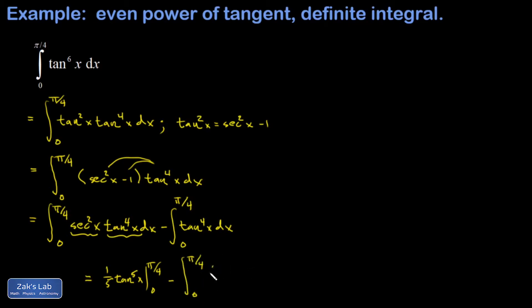I replace one of the tangent squareds again with sec²x − 1, so we end up with an integral of (sec²x − 1) times tan²x. In the next step, again I'll do a couple of things at once.